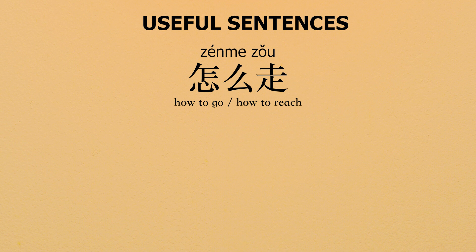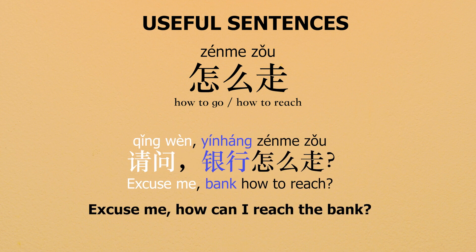怎么走. This word means how to go, how to reach. It's used to ask questions. For example, 请问银行怎么走.